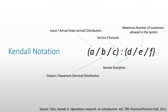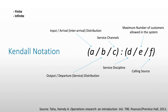Then we have letter E, which is the maximum number of customers allowed in the system. It can either be finite or infinite. And lastly, the calling source, which is letter F — again, it could either be finite or infinite. In our earlier example, it would be the grocery store, which can be infinite at some point.